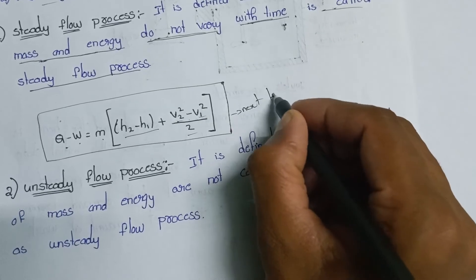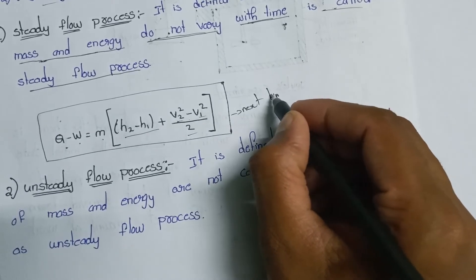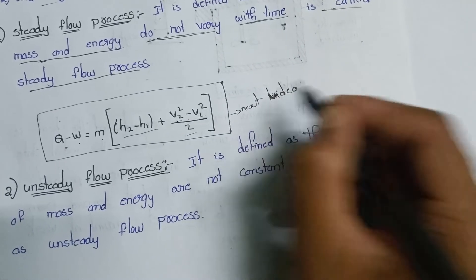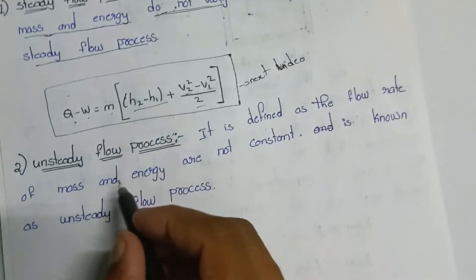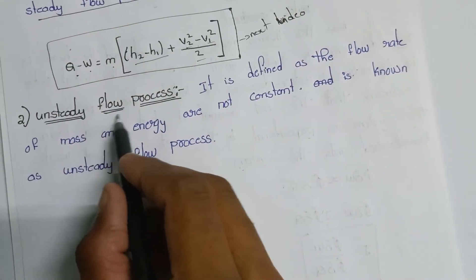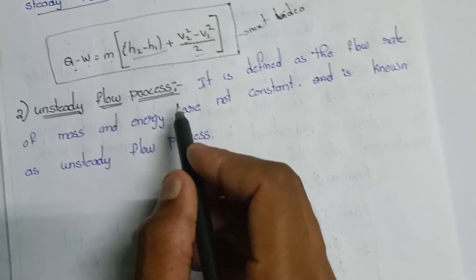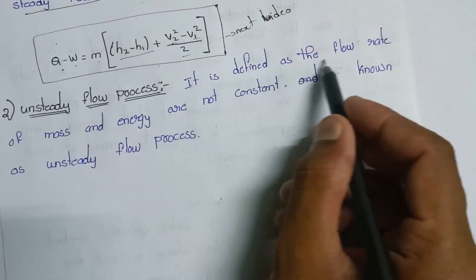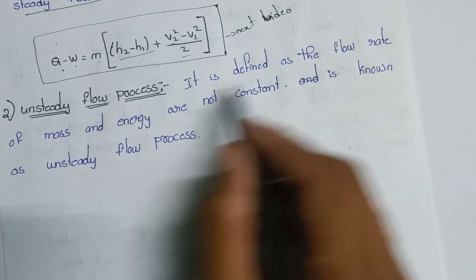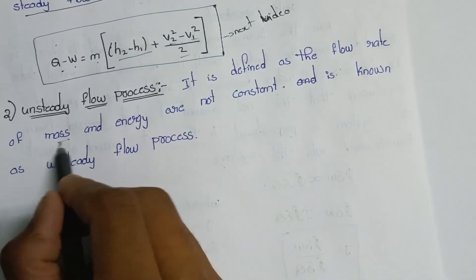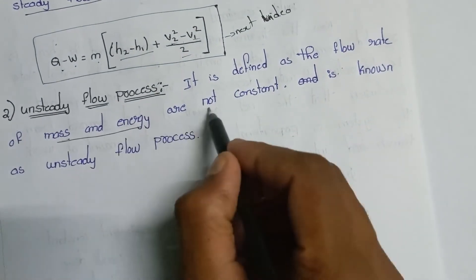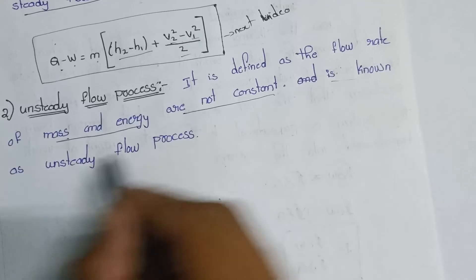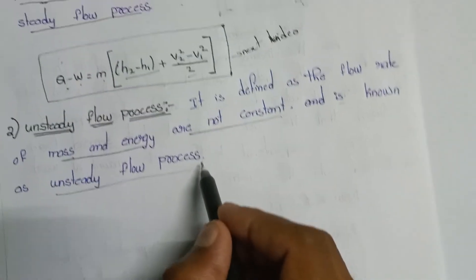Next is the unsteady flow process. It is defined as the flow rate of mass and energy are not constant — this is known as the unsteady flow process, where the flow rates do vary with time.